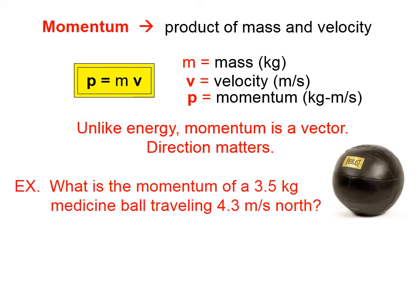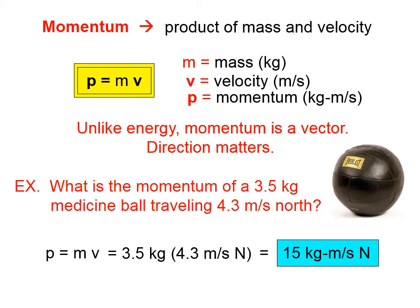What's the momentum of a 3.5 kilogram medicine ball traveling 4.3 meters per second north? This is a fairly easy problem because we're given the mass and the velocity. We multiply those two together, we get 15 kilogram meters per second north.